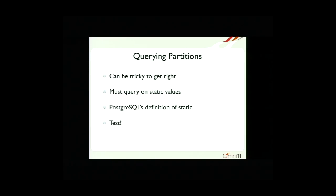Querying partitions — another important thing. I mentioned earlier you might have to change your application. The heart of this is that you have to query on static values in order for constraint exclusion to work. This is Postgres's definition of static value — if you think it's static but Postgres doesn't, Postgres wins. The only way to guarantee this is to go test the queries. You don't have to run the thing if you're worried about it being expensive — just do an EXPLAIN and look at the plan. If you're doing explain on a partition set and you think constraint exclusion should work, you'll see that in the plan.